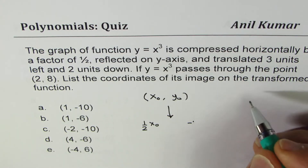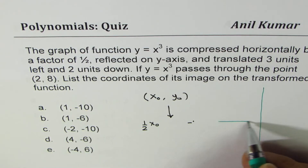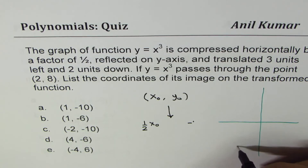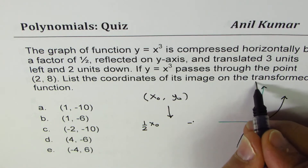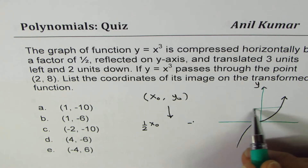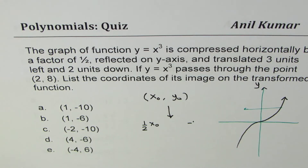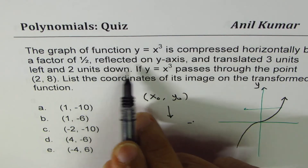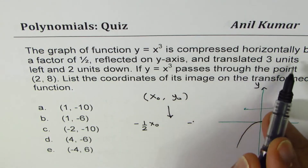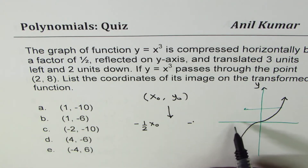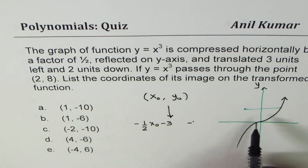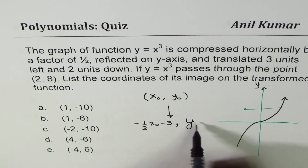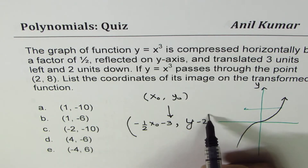So after the reflection, x becomes negative. Translated three units left means taking away three from the x value. Two units down is from the y value, so we get y minus two. The full image transformation is: x → -(½·x₀) - 3, and y → y₀ - 2. Now let's substitute the given point (2, 8).